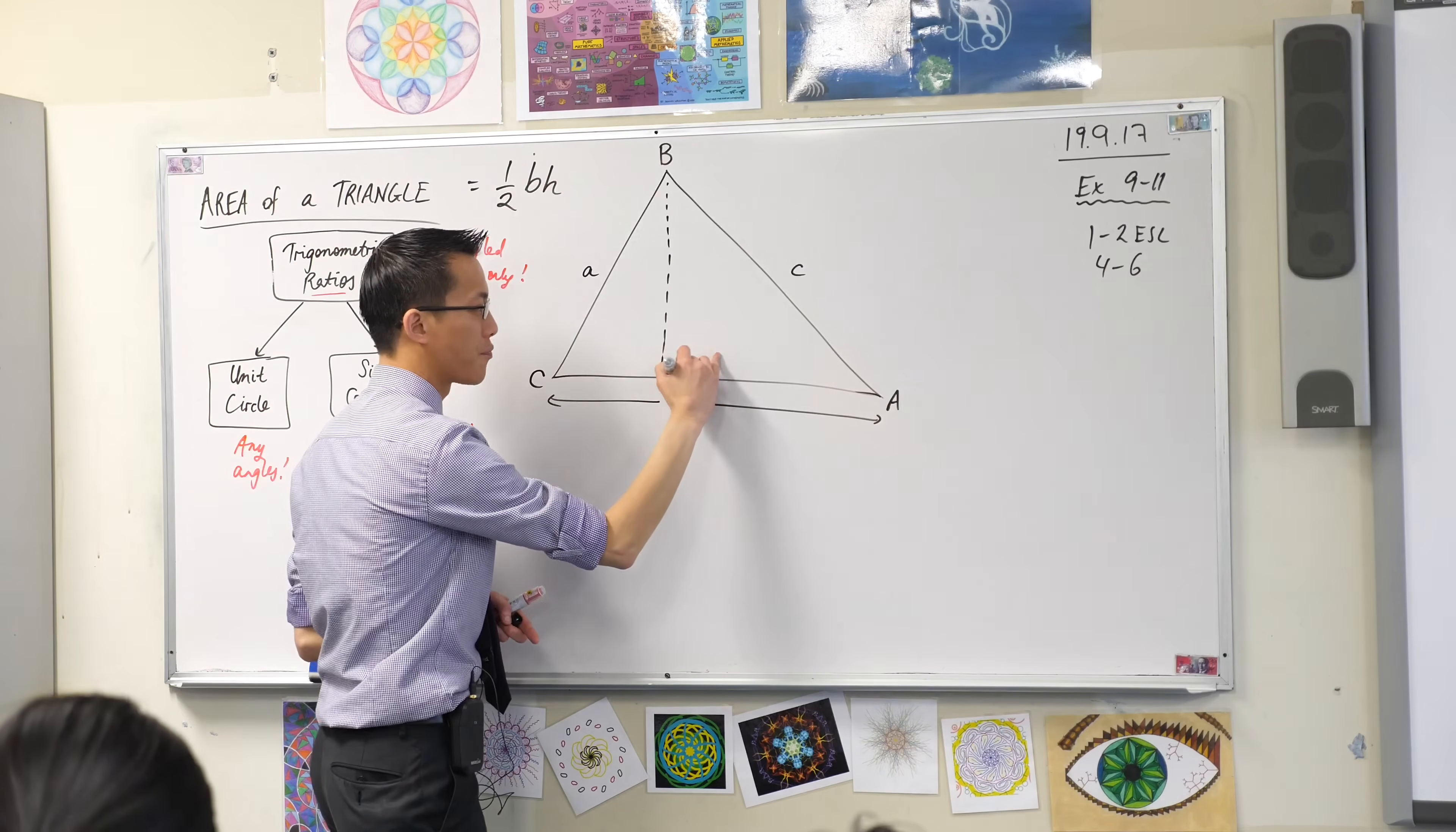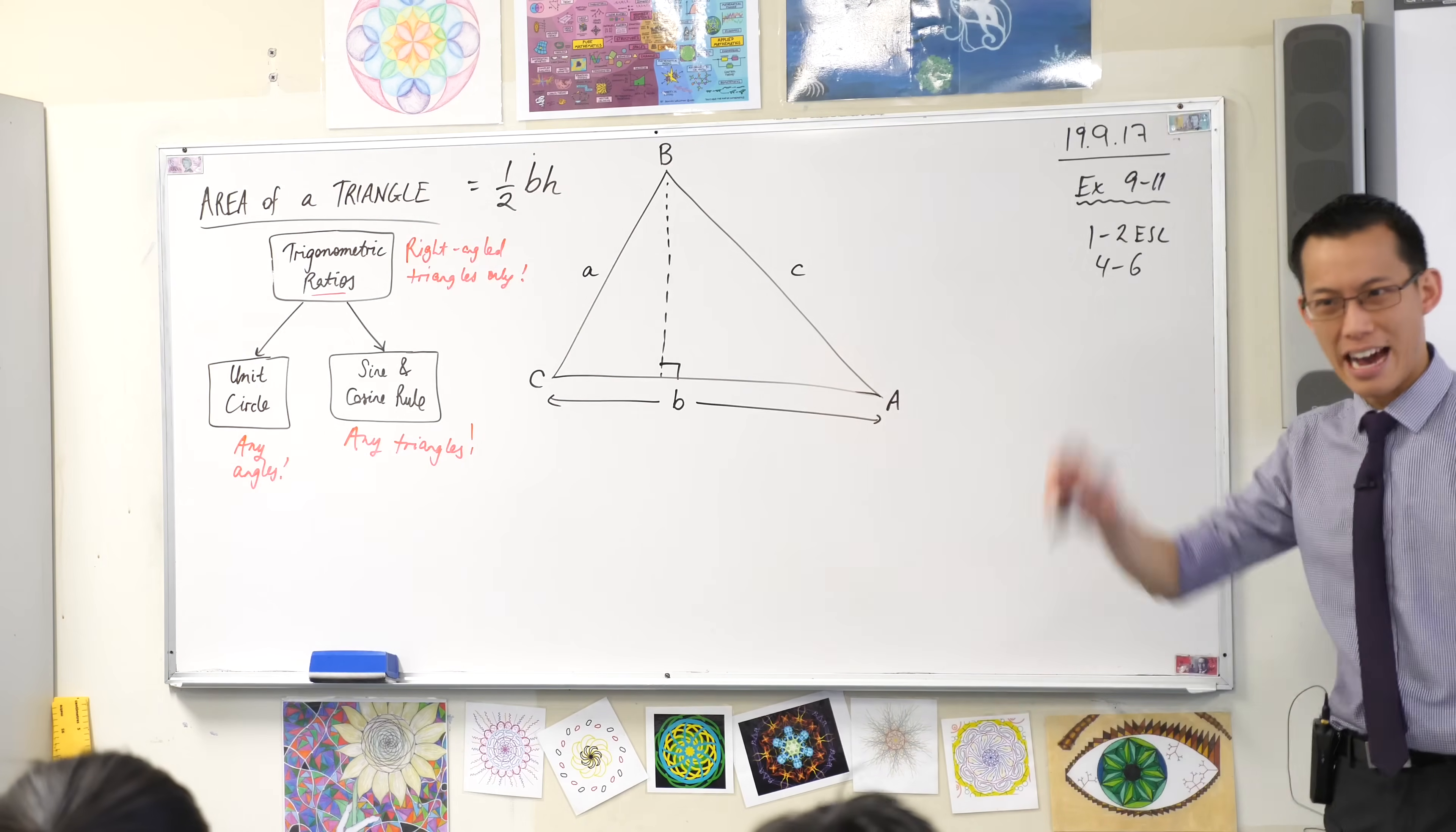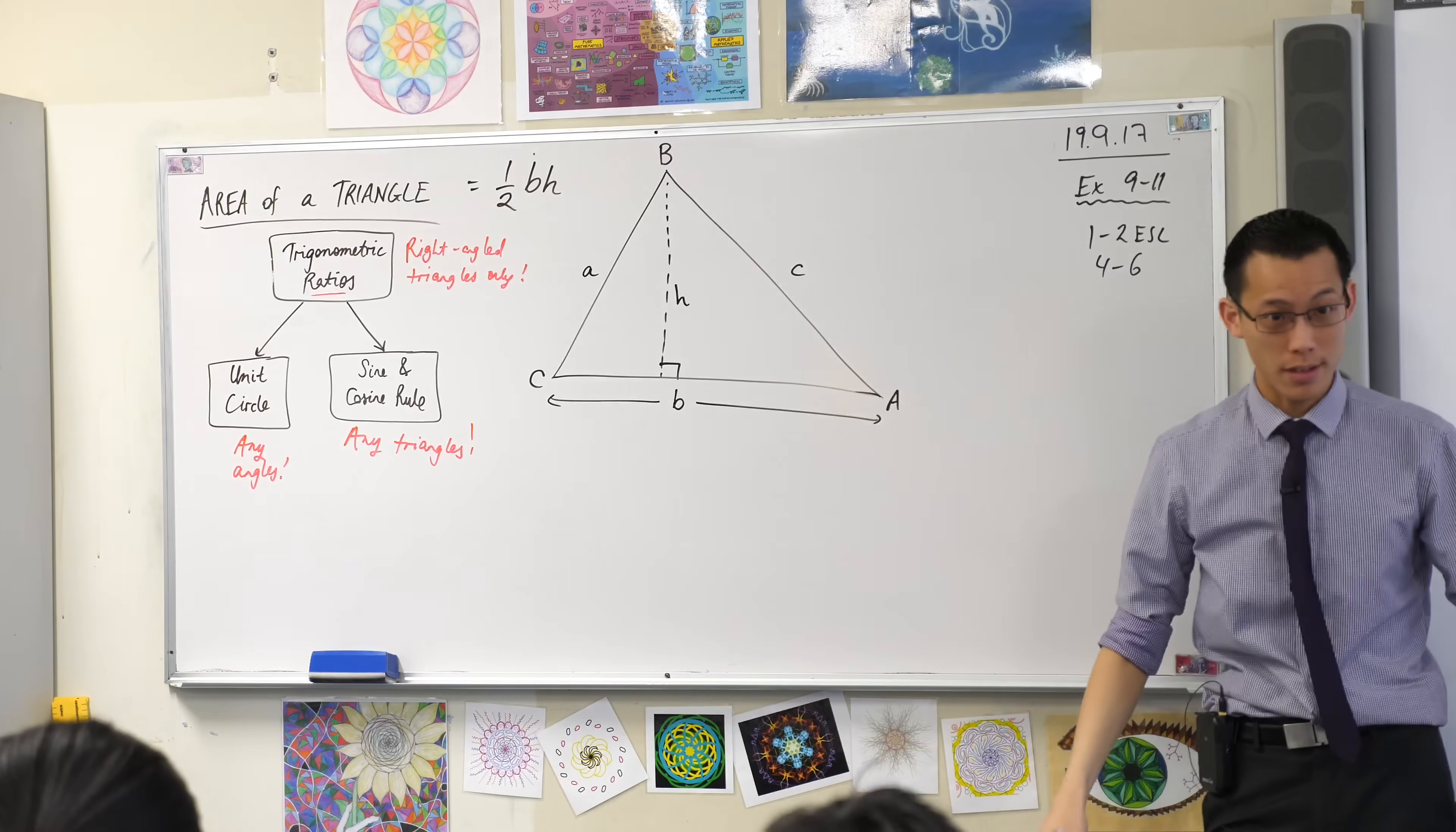this is not only the perpendicular height, we also give it the special name of being called an altitude, like the altitude of a plane up in the air, it's perpendicular to the ground. So let's call this guy H.